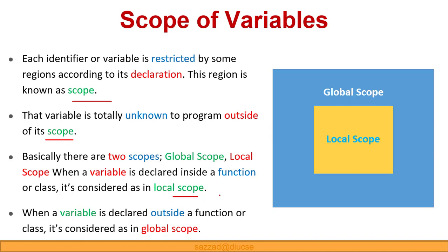When we declare a function and use some variables inside it, that particular variable is known as a local variable. For example, inside a function called 'fun', if we say a = 5, then 'a' is our local variable. A global variable, on the other hand, is accessible from anywhere inside the code — we can access it from outside the function and also inside the function as well.